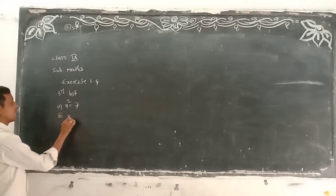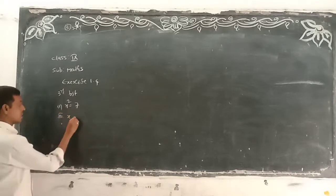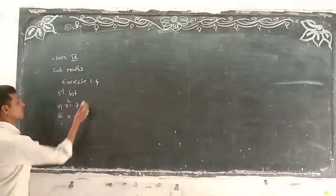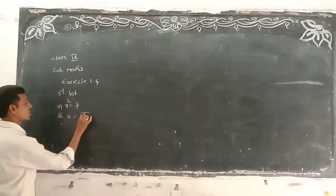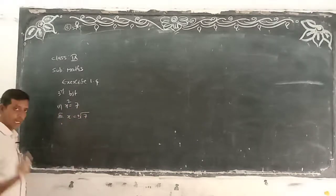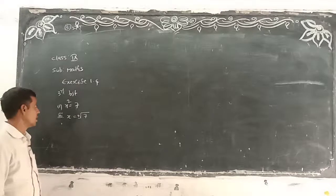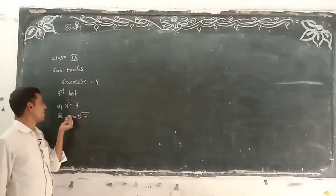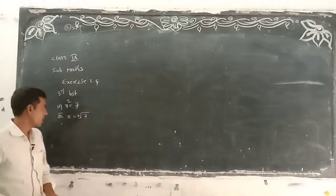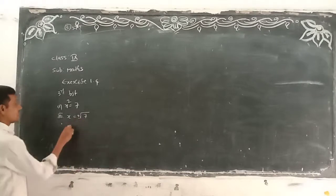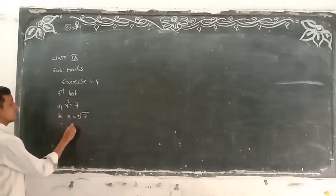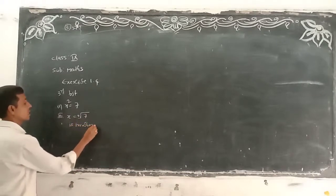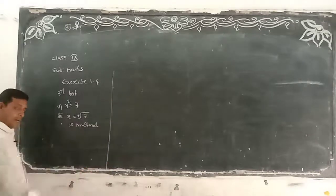If I write down x here, x is equal to — remove the square — then we can write square root, plus or minus. Remember, if you have the square and you are removing the square, we write down the square root. So √7 is irrational.